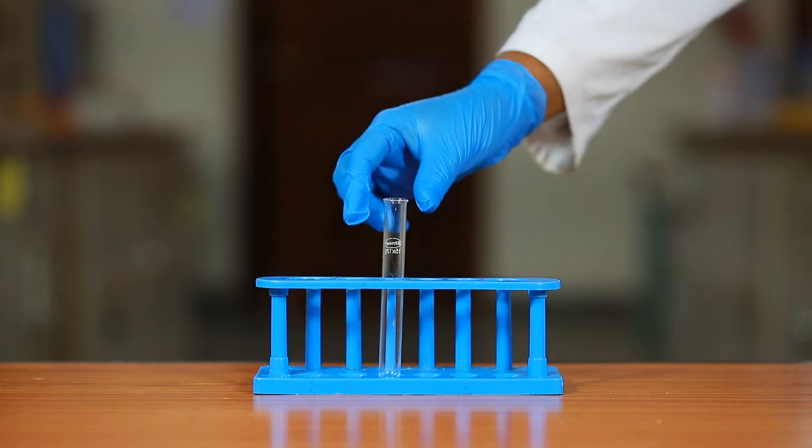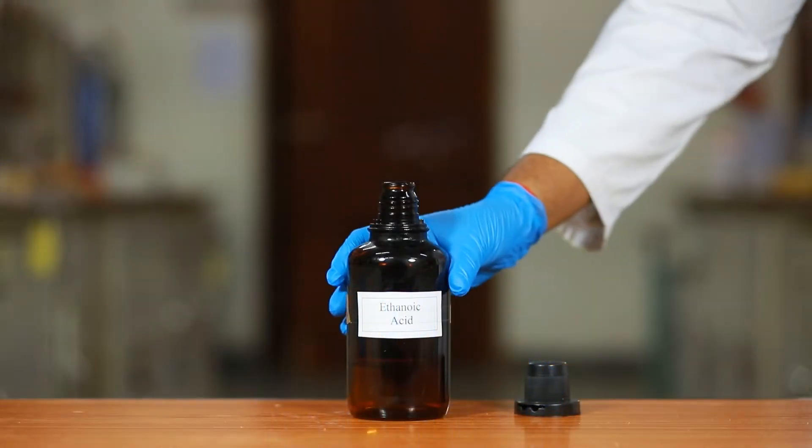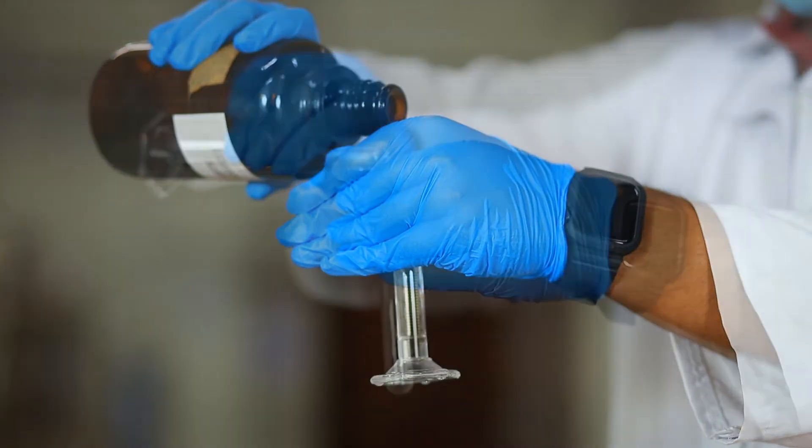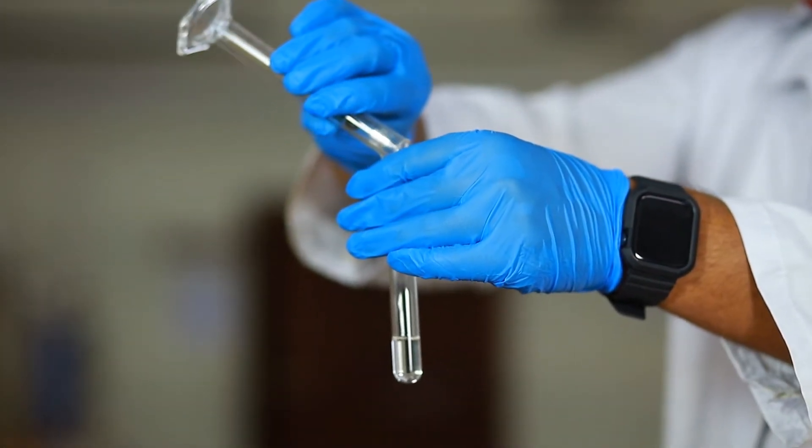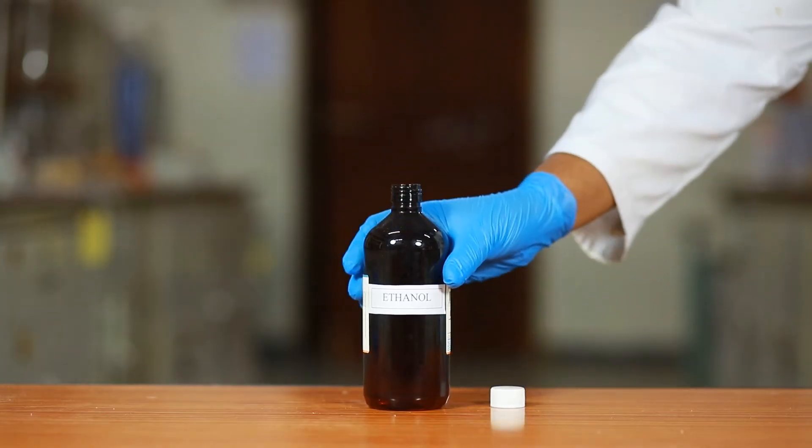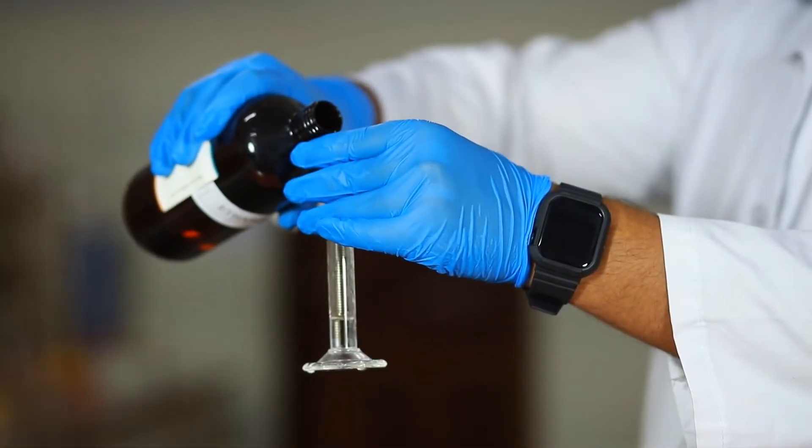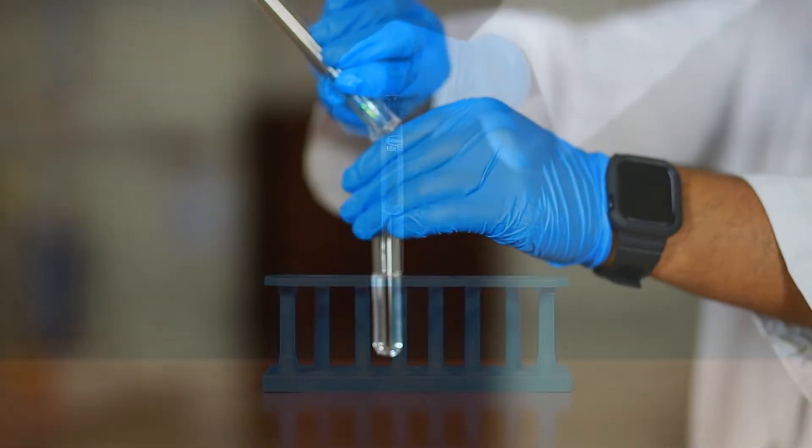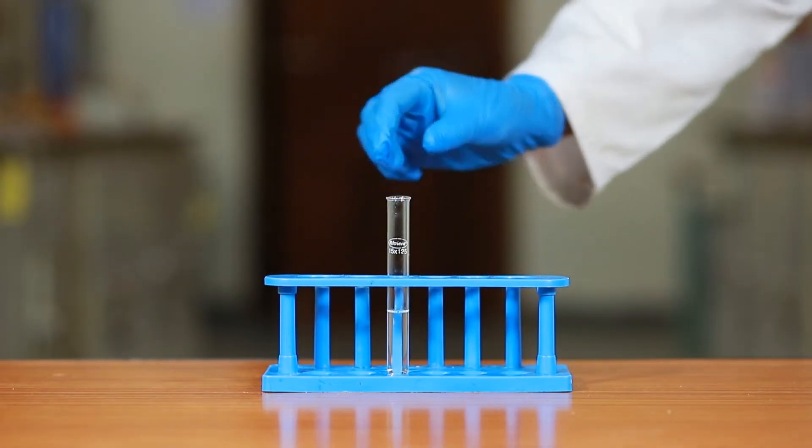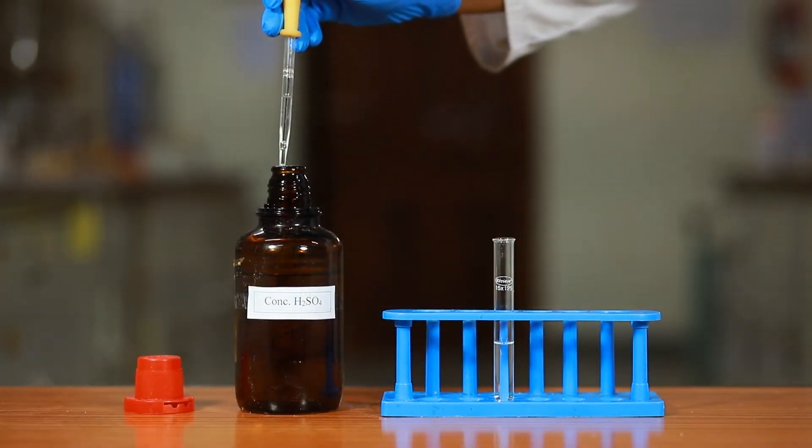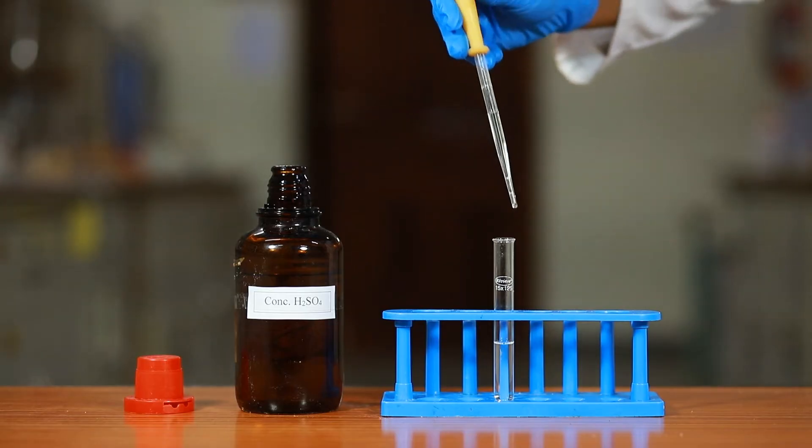Take a clean test tube in the test tube stand and add 3 ml ethanoic acid using a measuring cylinder. Add 3 ml ethanol to the test tube containing ethanoic acid. Add 4 to 5 drops of concentrated sulfuric acid to the reaction mixture using a dropper.